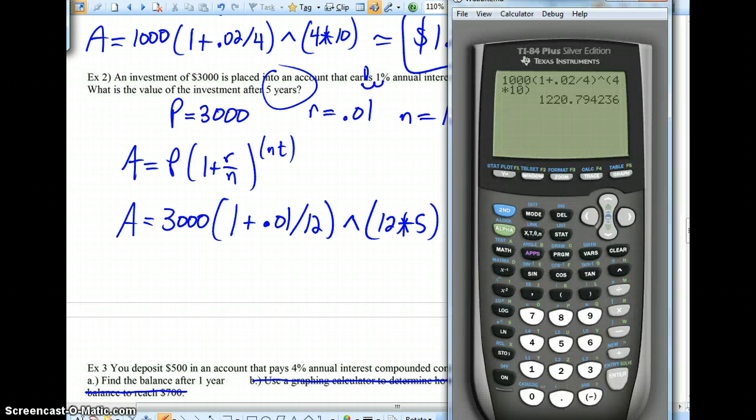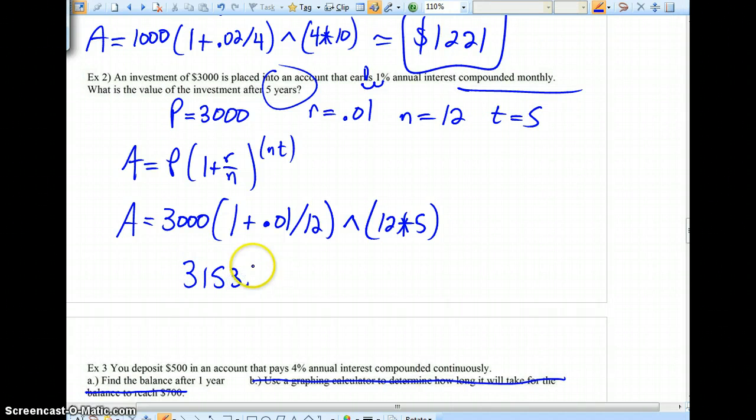And again, we're going to let the calculator do all the work for us. This time we'll go to the nearest penny. I'll be honest with you, that's probably the most typical thing that you'll be asked to do is round to the nearest cent. We're going to raise that up to caret, parentheses, 12 times 5. And we'll get $3,153.75, you can see, when we round to the nearest penny. So that's how much money we have at the end of five years, sorry.